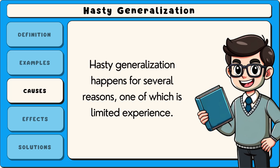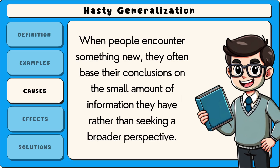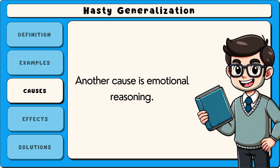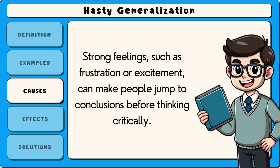Hasty generalization happens for several reasons, one of which is limited experience. When people encounter something new, they often base their conclusions on the small amount of information they have rather than seeking a broader perspective. Another cause is emotional reasoning. Strong feelings such as frustration or excitement can make people jump to conclusions before thinking critically.